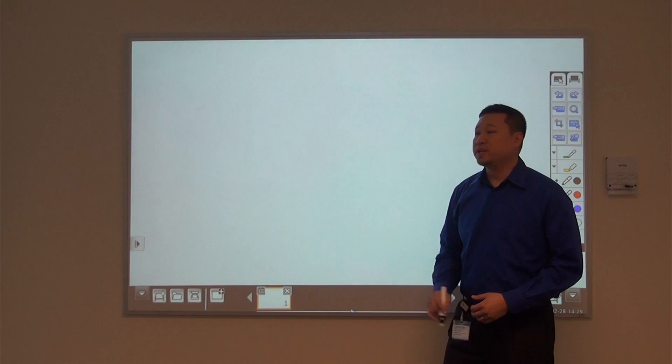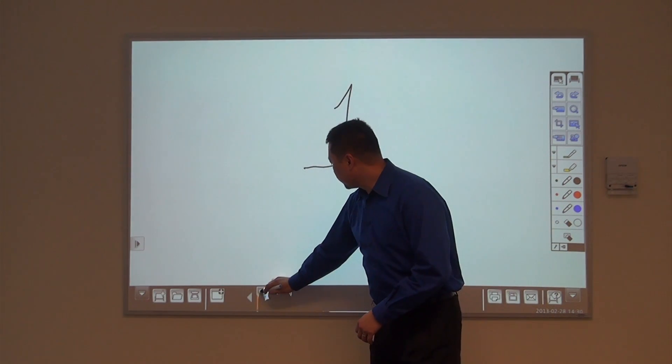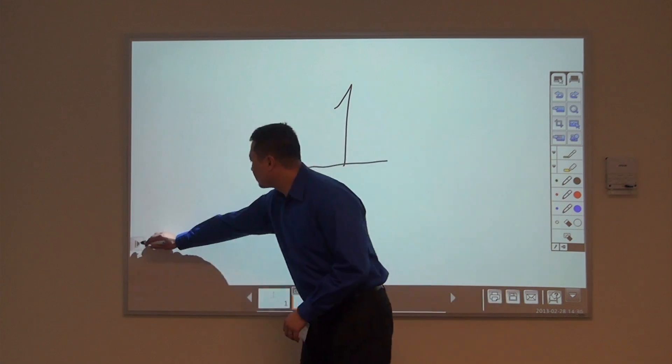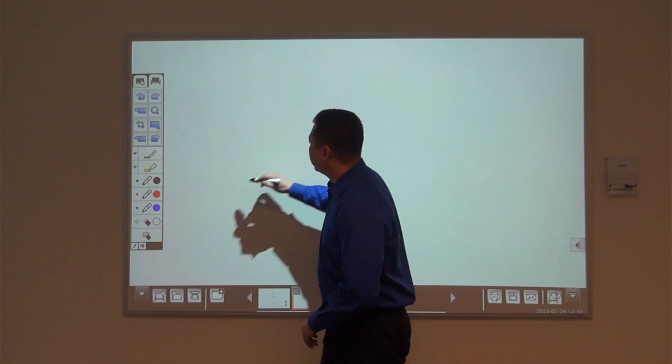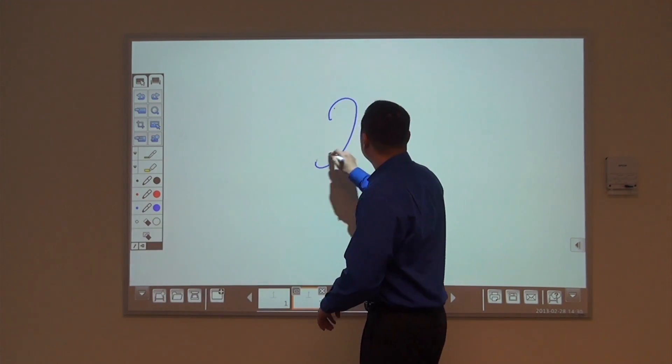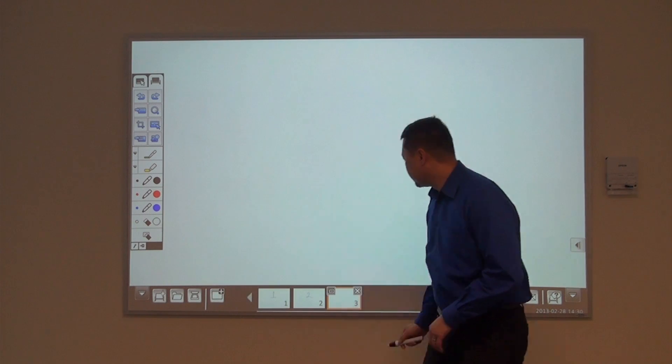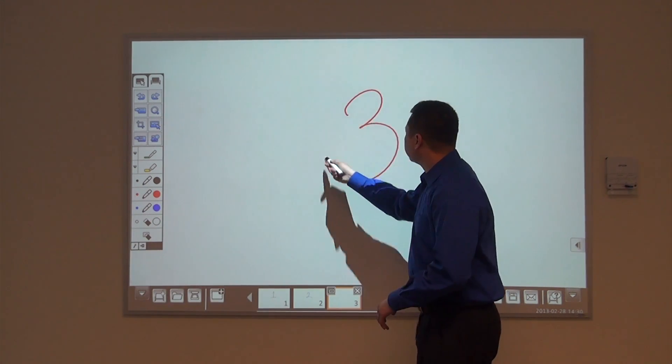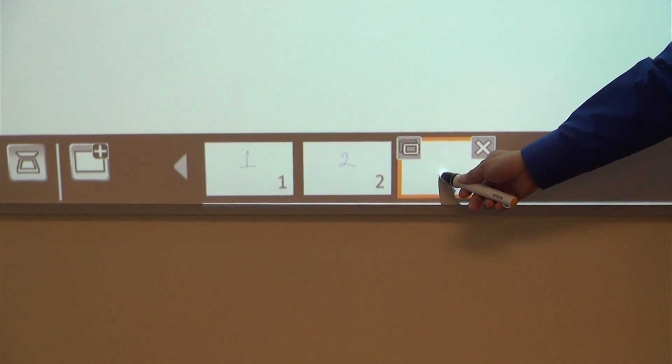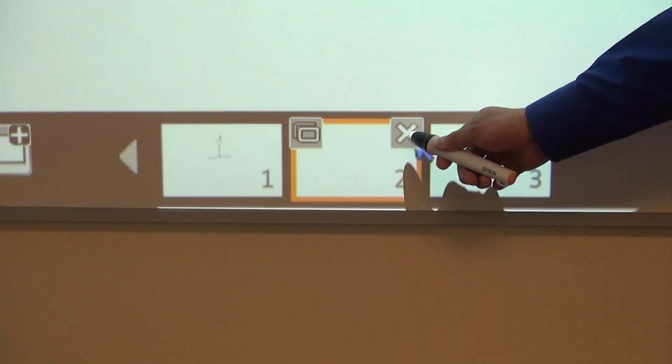So here we have the first page. I'm going to duplicate it. Erase page one. Change that to page two. Add another page. Make that page three. Move it by pressing down and sliding it over. And also delete the slide.